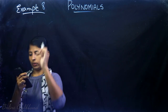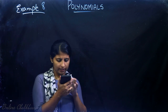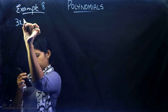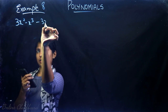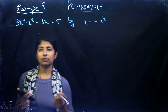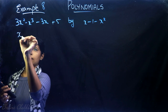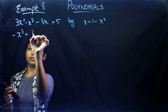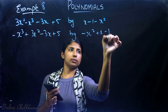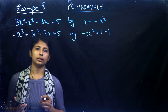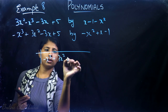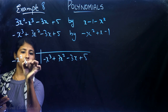Example 8: divide 3x² − x³ − 3x + 5 by x − 1 − x², and verify the division algorithm. First, arrange in descending order: −x³ + 3x² − 3x + 5 divided by −x² + x − 1. Divide the highest degree term −x³ by −x² to get x. Multiply x by (−x² + x − 1) to get −x³ + x² − x. Subtracting gives 2x² − 2x + 5.